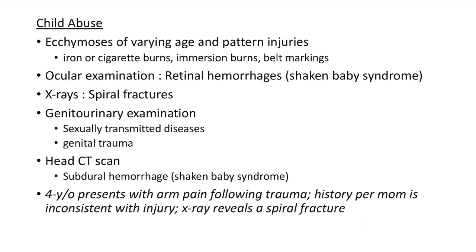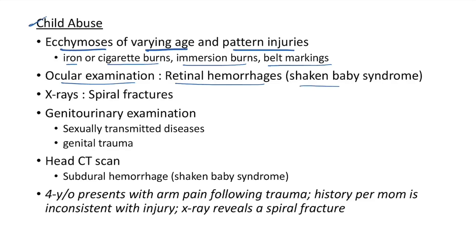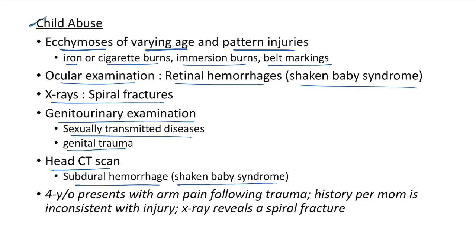Child abuse: clinical features include ecchymosis of varying age and pattern, cigarette burns, iron rod burns, immersion burns (child immersed in boiling water), and belt markings. Ocular examination reveals retinal hemorrhage due to violent shaking (shaken baby syndrome). X-rays show spiral fractures. Genitourinary examination may reveal sexually transmitted diseases and genital trauma. Head CT scan shows subdural hemorrhage due to shaken baby syndrome.